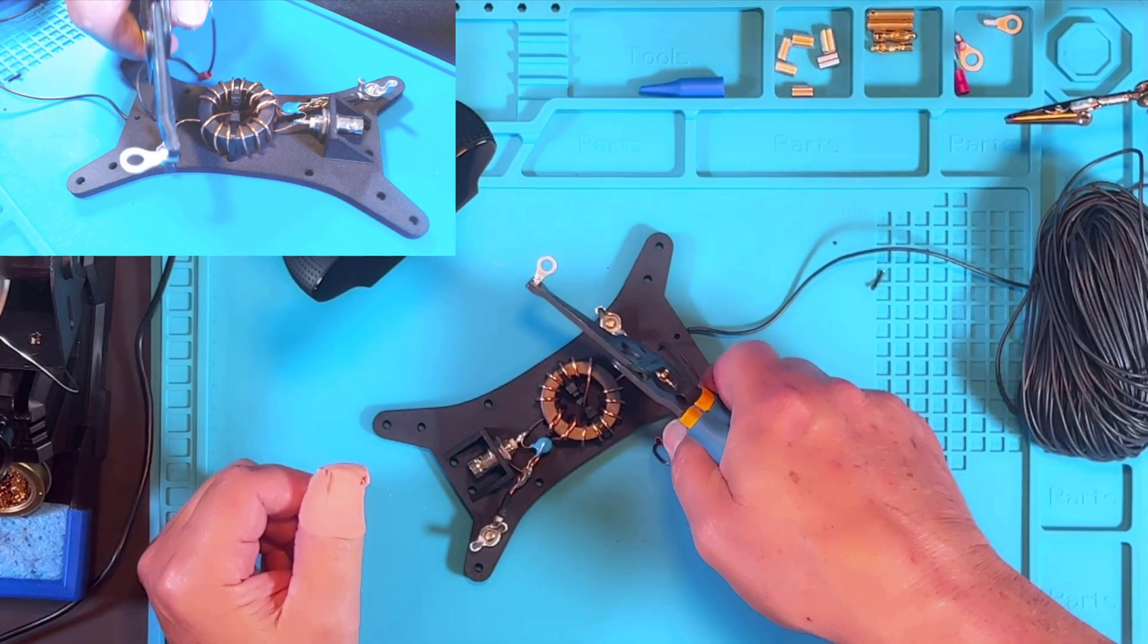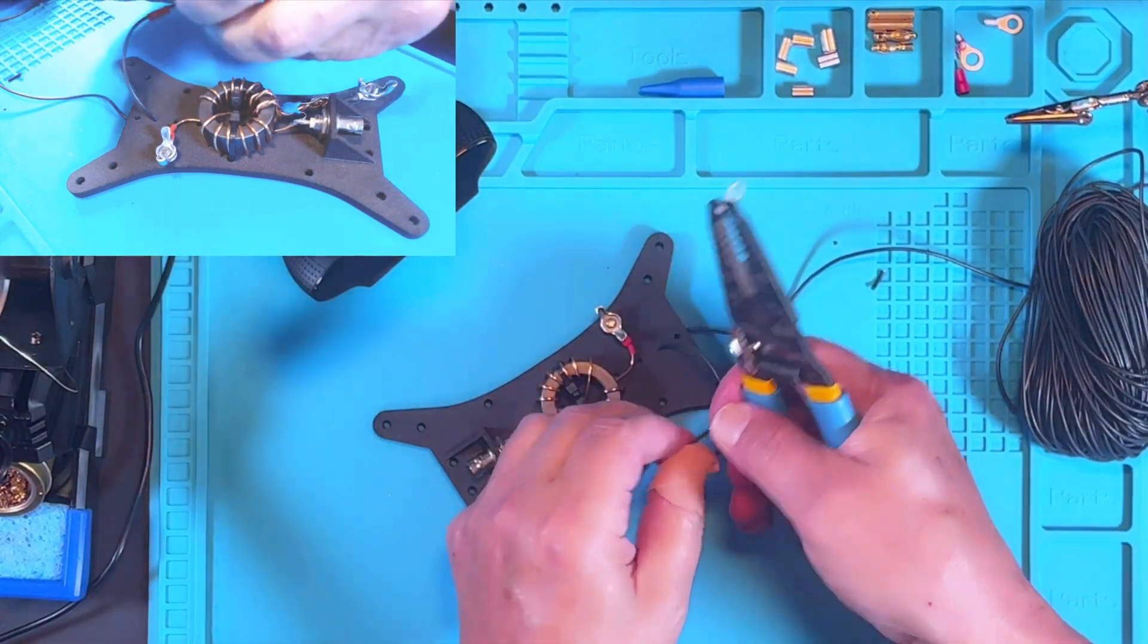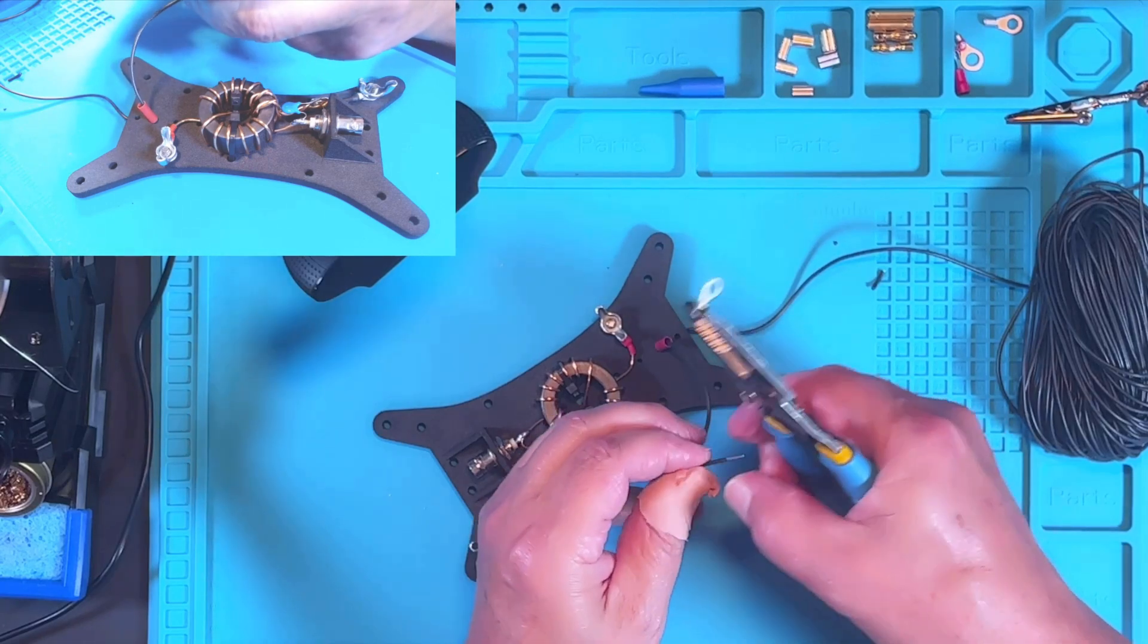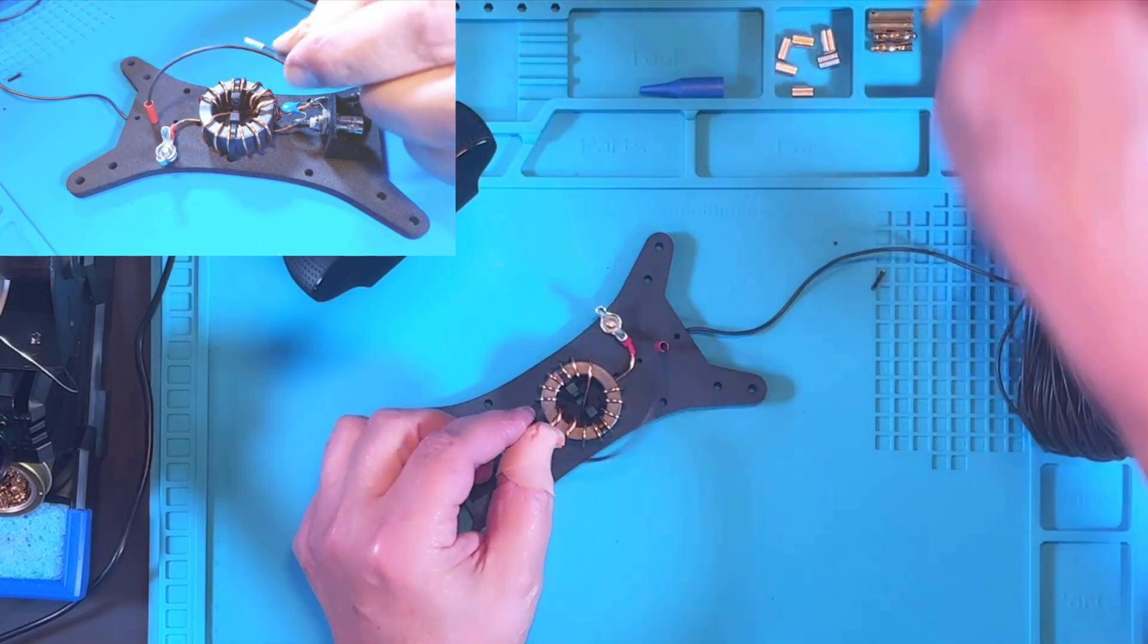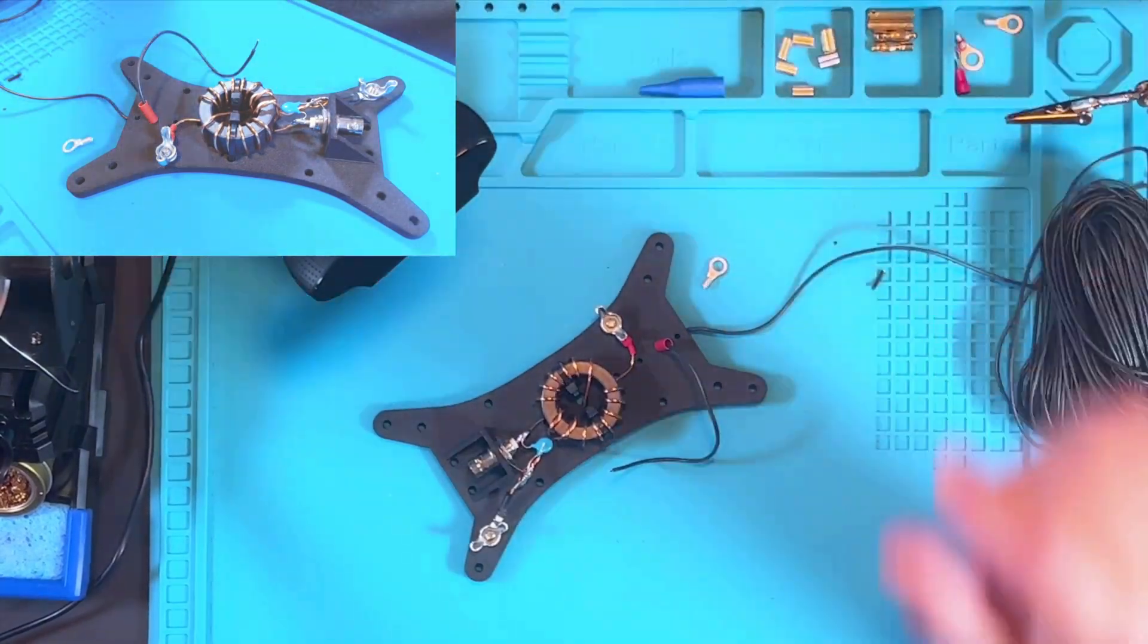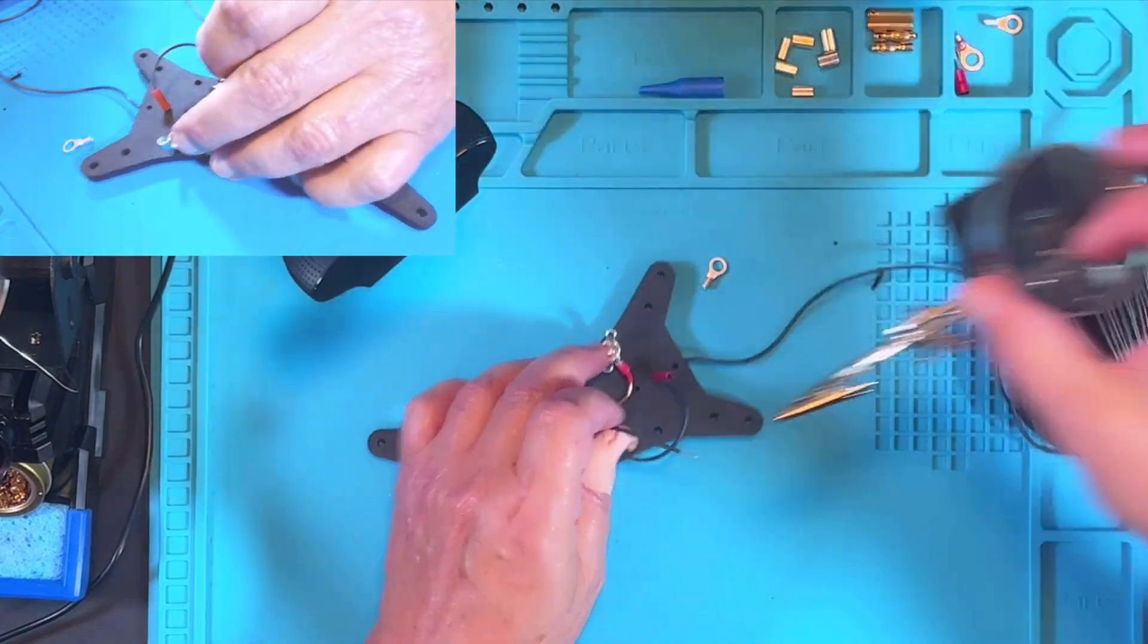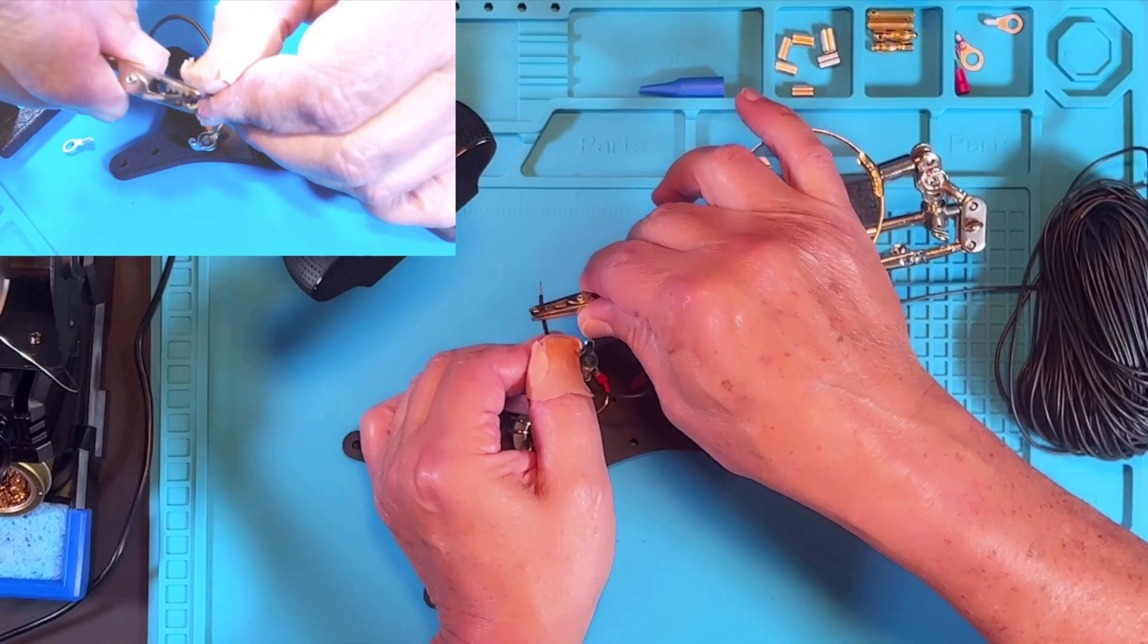Again, my method is I grab the terminal towards the bottom. We're going to stop here a second, because I should really pre-tin that. Then that will work better in that connector.